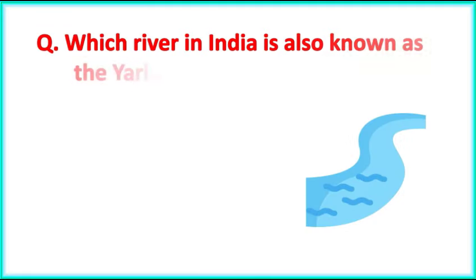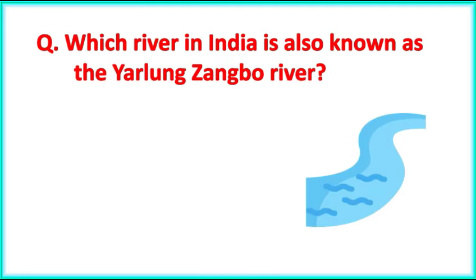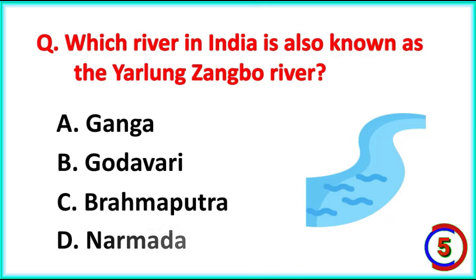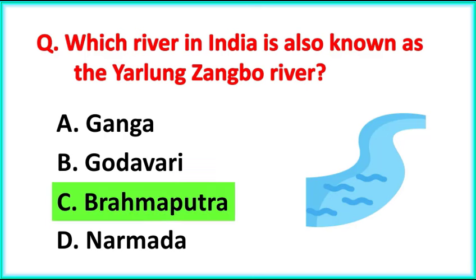Which river in India is also known as the Yarlung Tsangbo River? The correct answer is option C: Brahmaputra River.